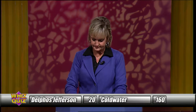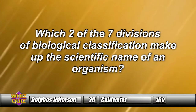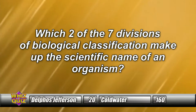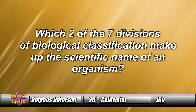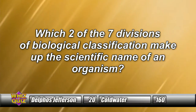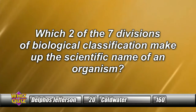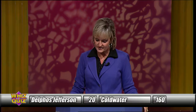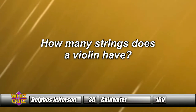Moving to the final ten questions of round two. Which two of the seven divisions of biological classification make up the scientific name of an organism? Delphus answers — 'Genus and species' — correct. How many strings does a violin have? Coldwater answers — 'Four' — four is the answer.